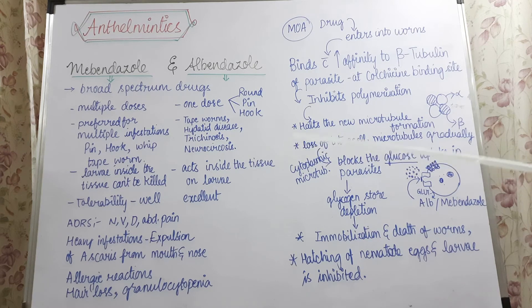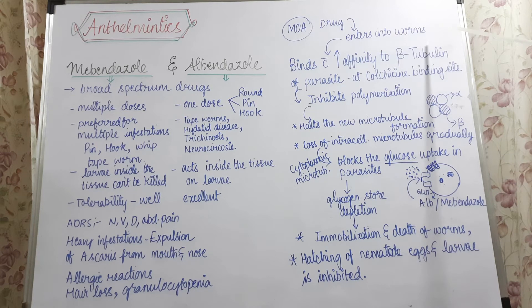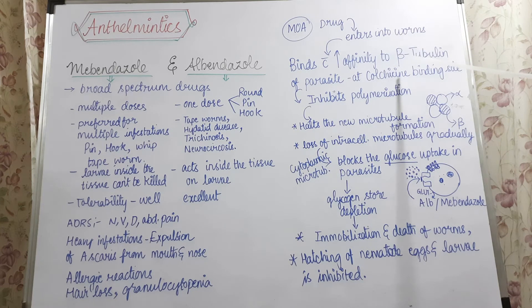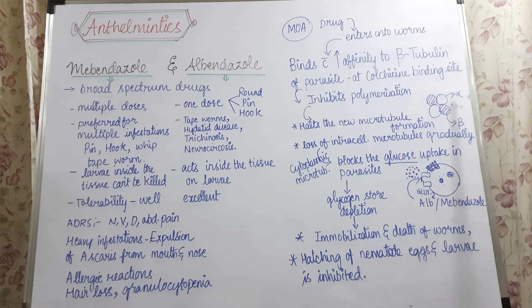Coming to the mechanism of action: both drugs are taken orally. After absorption, the drug starts acting on the worms. Once it comes in contact with the worms, it enters inside the worms. Inside the worm, the drug goes and binds to beta-tubulin. Albendazole and mebendazole both have high affinity to beta-tubulin. Beta-tubulin and alpha-tubulin are both present in microtubules.